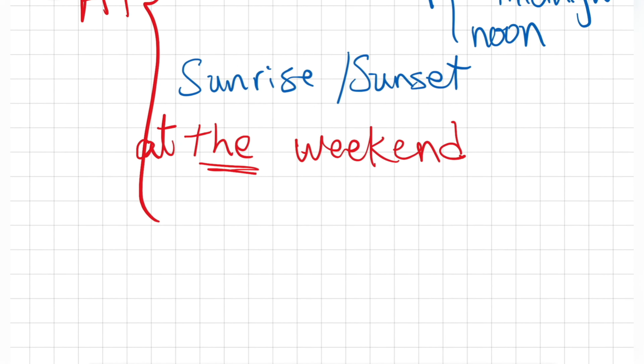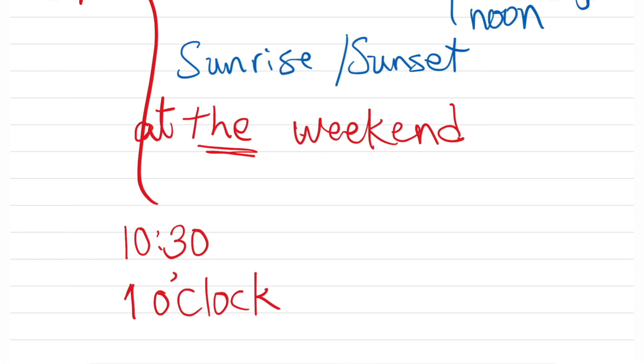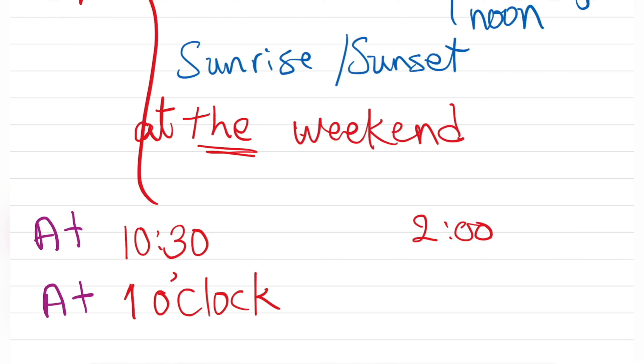When we want to talk about a specific time, we always use AT — 'at three o'clock,' 'at four,' 'at 3:30.' Note that we don't use o'clock for 3:30 — we just say 'at 3:30.' For all specific times we use AT: 'at 10:30,' 'at one o'clock,' 'at two,' 'at 3:15.' For example, 'the class starts at 3:15.'